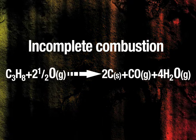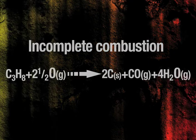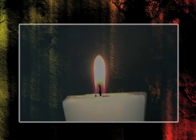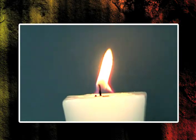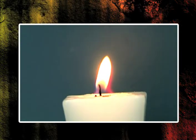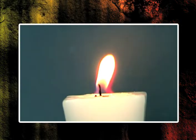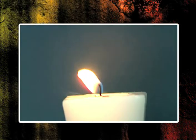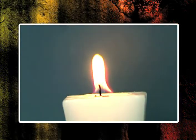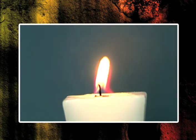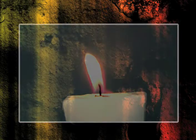This candle is a good example of a complete combustion system. If we make the flame flicker, we can see smoke appearing. This is soot. This candle is now showing incomplete combustion.